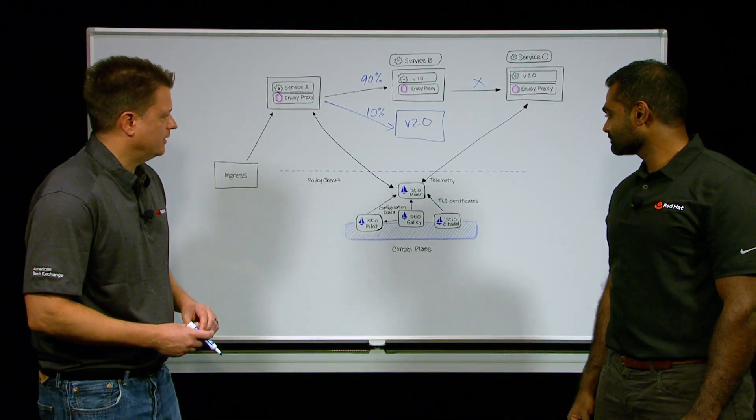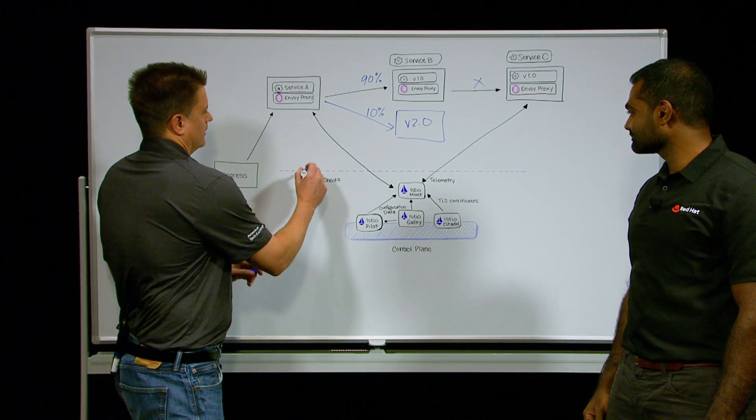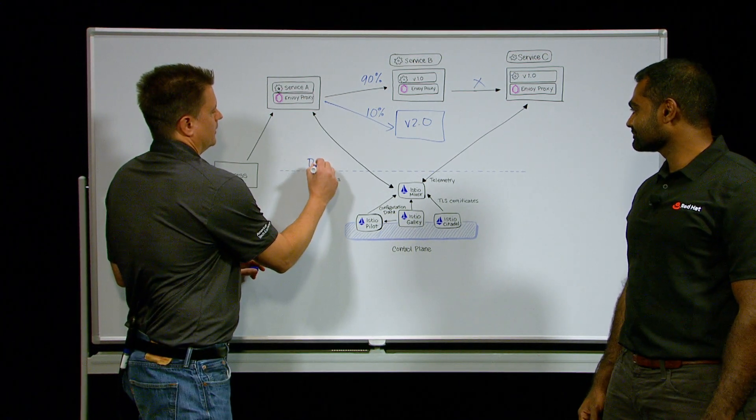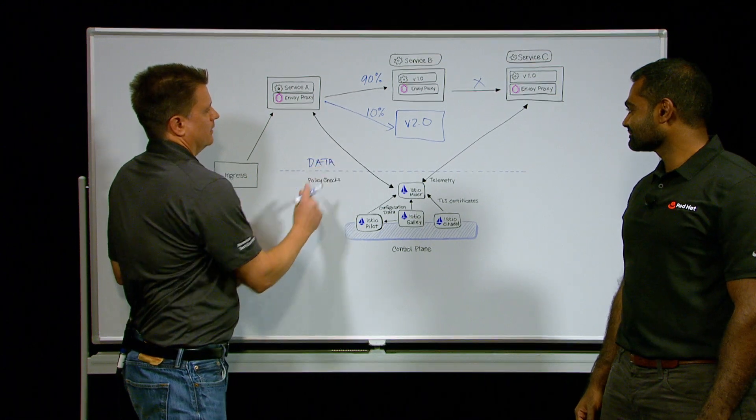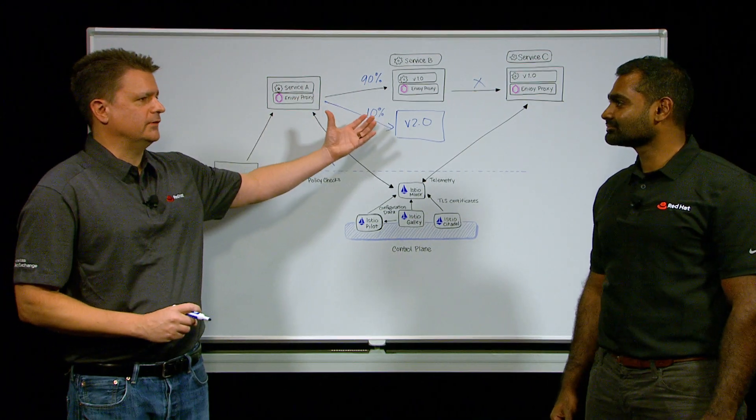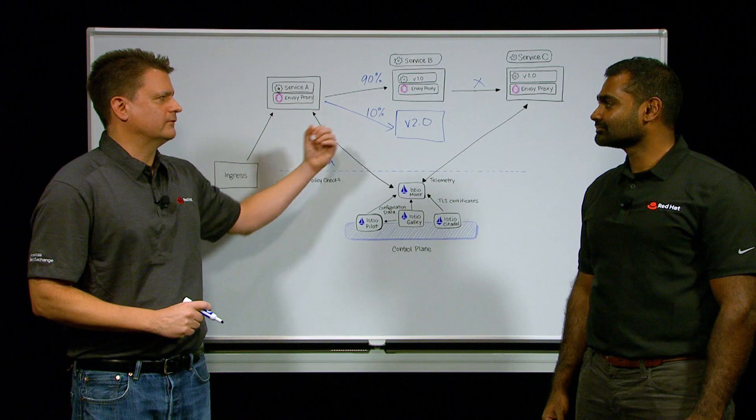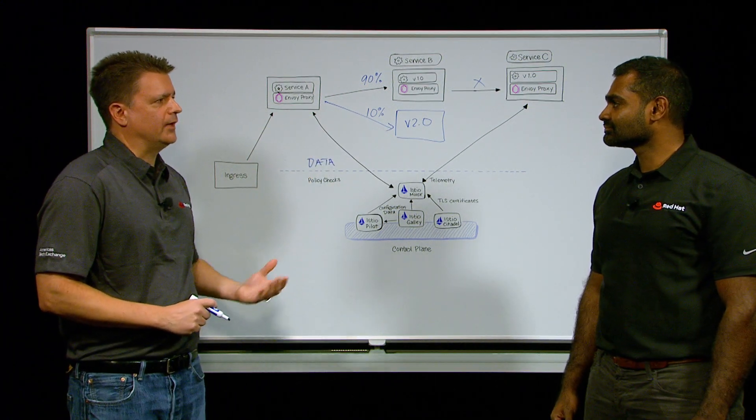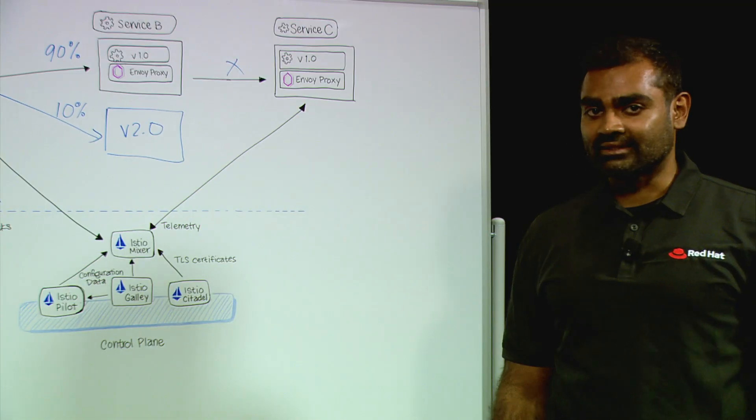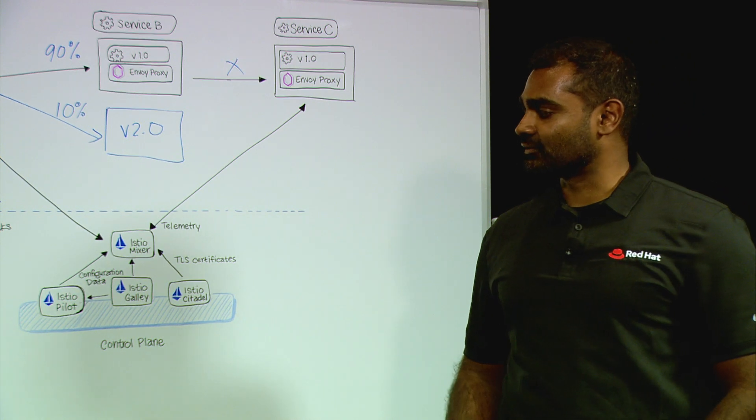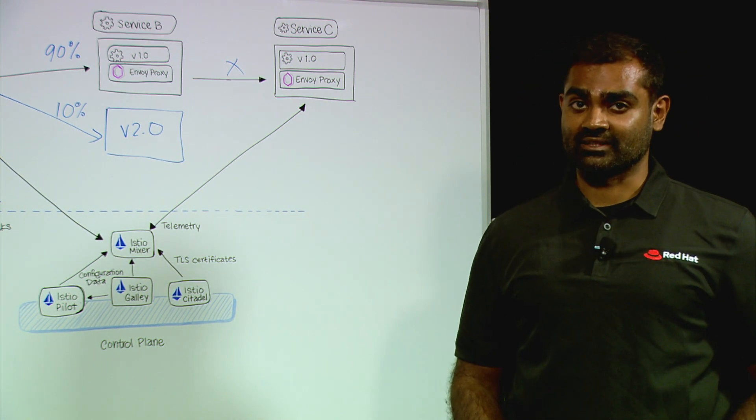Well it's divided into two planes. On the bottom you have the control plane and at the top there's the data plane. And the data plane is really where your sidecar proxy installs go into your containers so that it's managing all the traffic inbound and outbound throughout the mesh. The control plane handles the configuration and policies that make the service mesh work. It's comprised of four major parts.